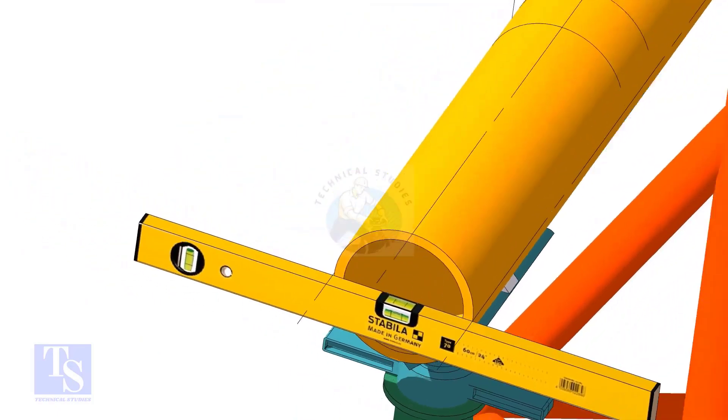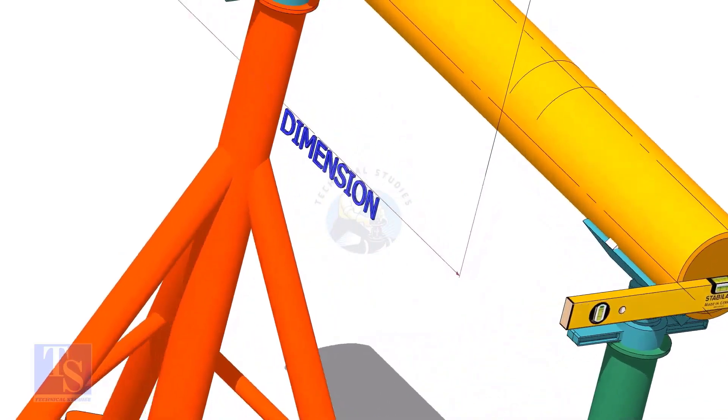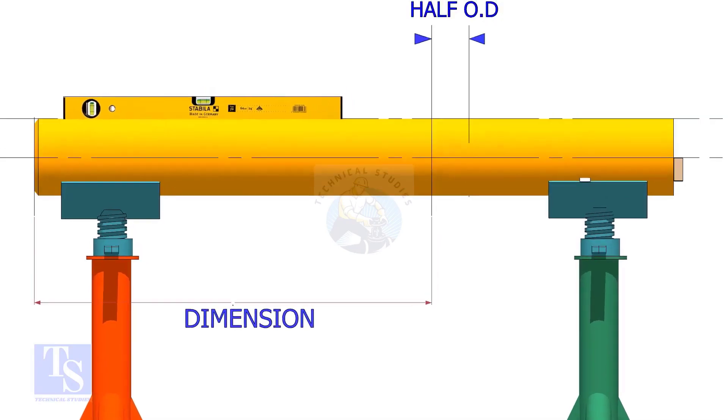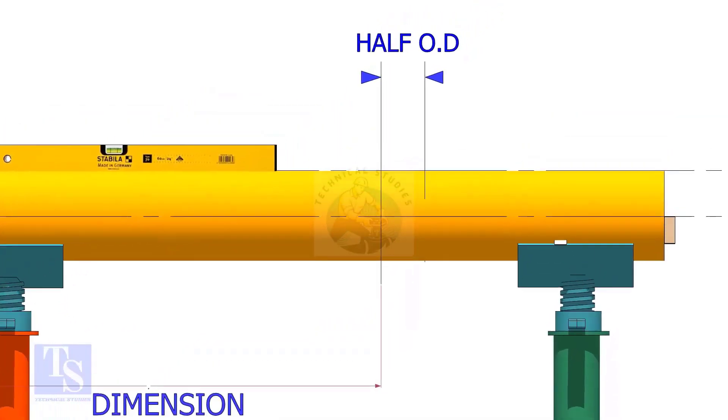Mark the center of the laterolette as per the drawing. Mark half OD of the header in the direction of the laterolette on the top of the pipe. This line is actually for inspection purposes only.